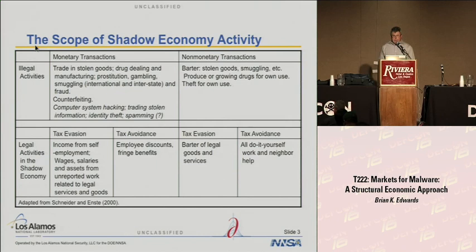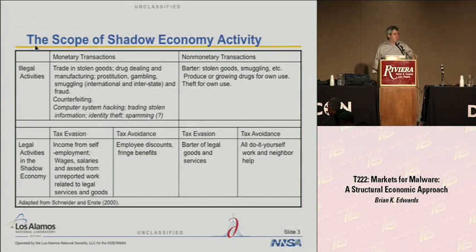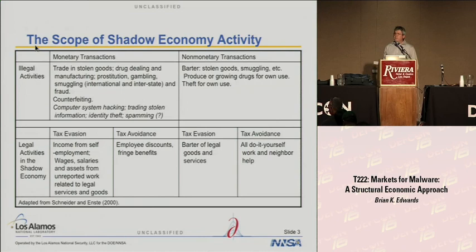There's an interesting anecdote — this article was published in the year 2000, and I actually had to add something. If you go to the top left cell where we have monetary transactions and illegal activities, that italicized piece is something I added. Because in the year 2000, hacking and shadow information sector activities were not really significant enough to be included. But I'm quite new to this area, so I don't know when it started becoming more significant.